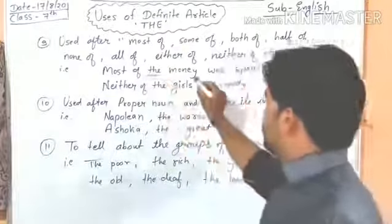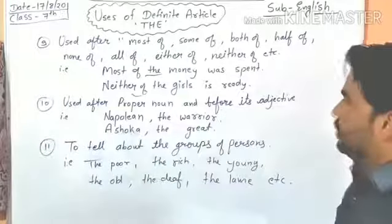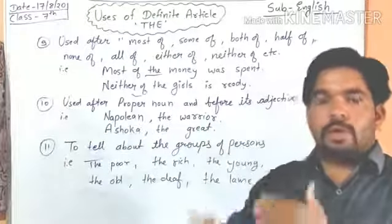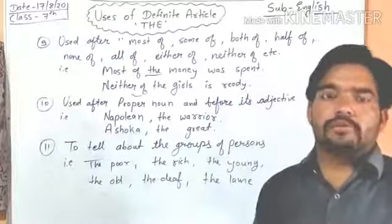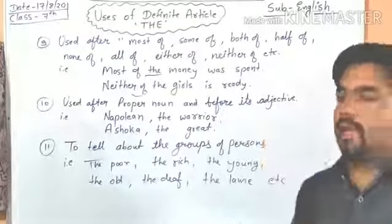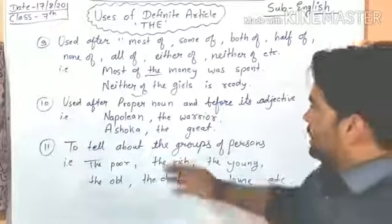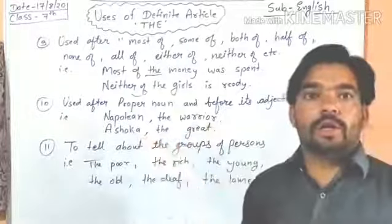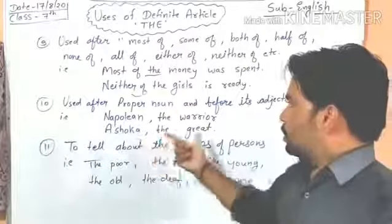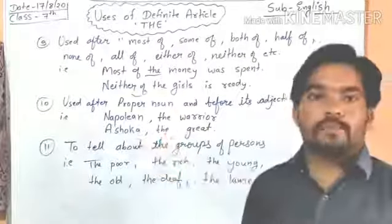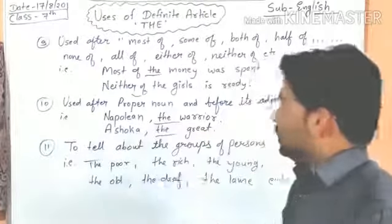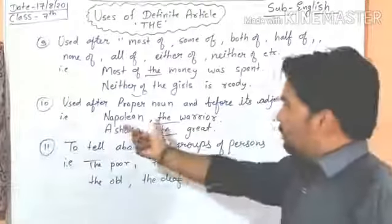The tenth use: 'the' is used after a proper noun and before its adjective — किसी proper noun और उसके विशेषण के बीच में भी 'the' लगता है। For example: 'Napoleon the Great,' 'Ashoka the Great' — यहाँ Napoleon और Ashoka proper nouns हैं और 'the' उनके adjective से पहले आता है।